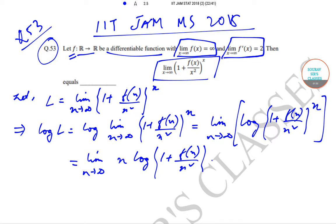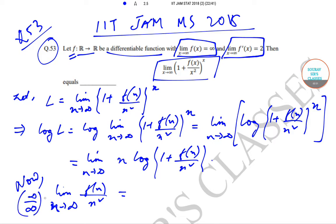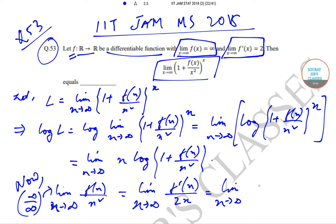Let us find the value of the limit of f(x)/x² as x tends to infinity. Since f(x) tends to infinity, this is of the infinity/infinity form, so we apply L'Hôpital's rule and differentiate numerator and denominator separately. This gives f'(x)/(2x). Since the limit of f'(x) as x tends to infinity is 2, we get 2/(2x), and as x tends to infinity, 1/x tends to 0. So the limit of f(x)/x² equals 0.